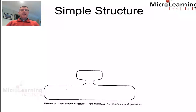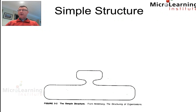In Mintzberg's diagram of the simple structure, we can see that all that is here is the strategic apex directly linked to the operating core. There is very little evidence of any middle line in this structure, and very little evidence of any technostructure or support staff.